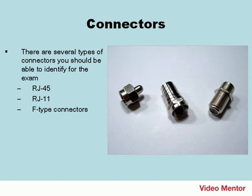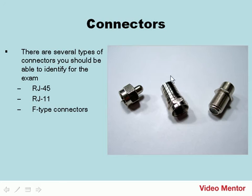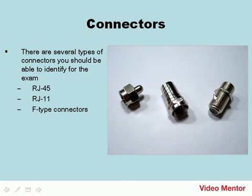F-Type connectors are used for cable TV and cable internet connections, as well as for satellite TV or internet. They are screw-on connectors, and the most common is the RG6. There's a standard RG6 connector, an RG6 terminator — any unused line on a splitter should have a terminator put on it — and a coupler, which lets you connect two cables to make the RG6 line longer, though it's not always recommended.